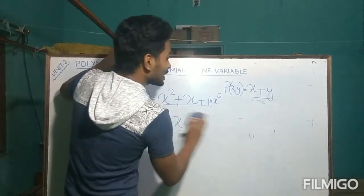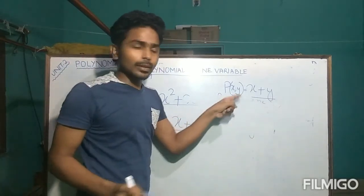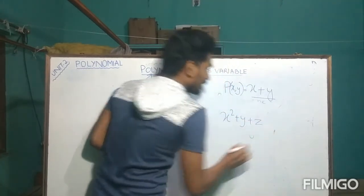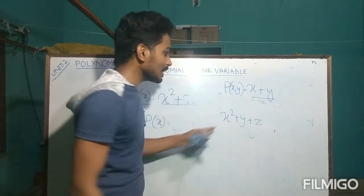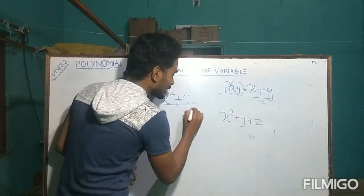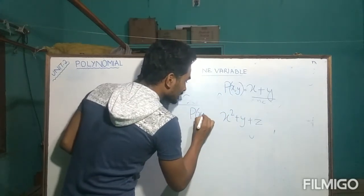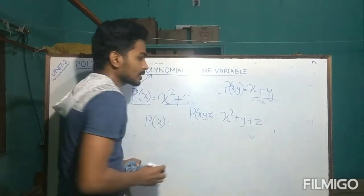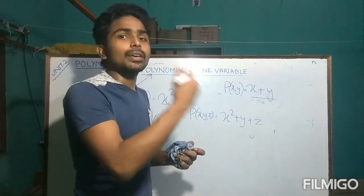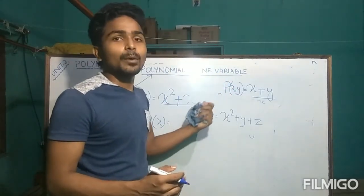If the polynomial is in two variables, we write it as P(X, Y). If the polynomial is in the form X + Y + Z, it is a polynomial in three variables. In such cases, we write it as P(X, Y, Z). So we can write a polynomial as P(X), P(Y), P(X, Y), or P(X, Y, Z).